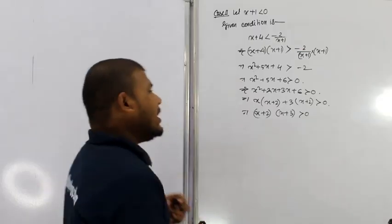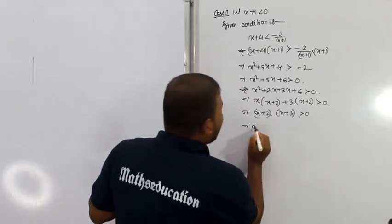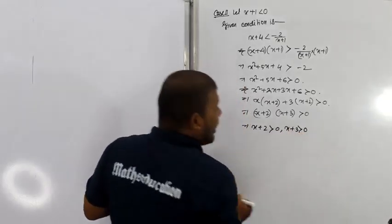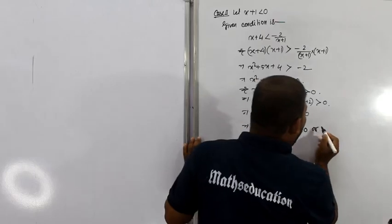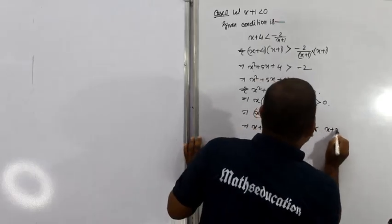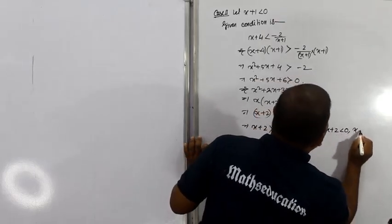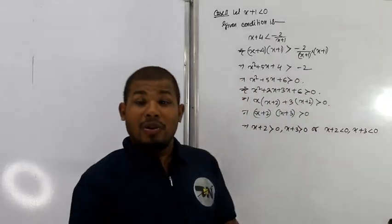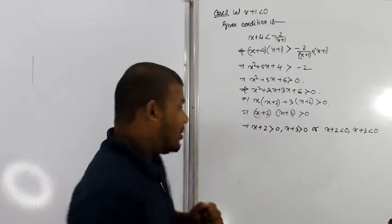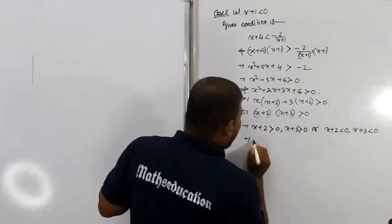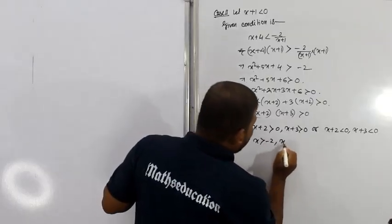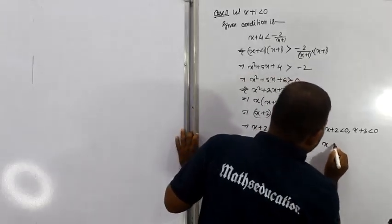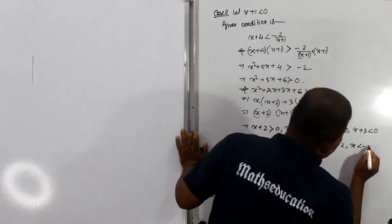For the product x plus 2 times x plus 3 to be positive, either both quantities are positive or both are negative. Case A: x plus 2 is greater than 0 and x plus 3 is greater than 0, giving x is greater than minus 2 and x is greater than minus 3, so x is greater than minus 2. Case B: x plus 2 is less than 0 and x plus 3 is less than 0, giving x is less than minus 2 and x is less than minus 3, so x is less than minus 3.